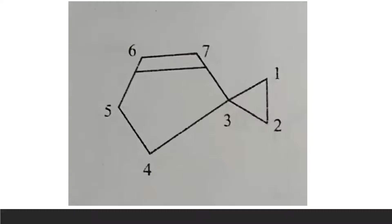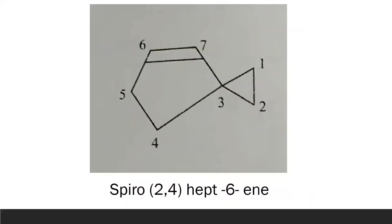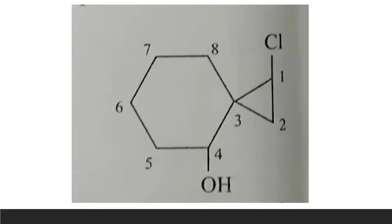In the next spiro example, we start giving locant positions from the smaller ring — even though the other ring has an alkene group — because priority here is given to the number of carbon atoms. There are seven carbon atoms total; the common carbon is the third carbon, with two carbon atoms in the first ring and four in the second ring. The name is spiro[2.4]hept-6-ene: 2,4 for the carbon atoms in each ring, 'hept' for seven carbons, and '6-ene' because the double bond is at position 6.